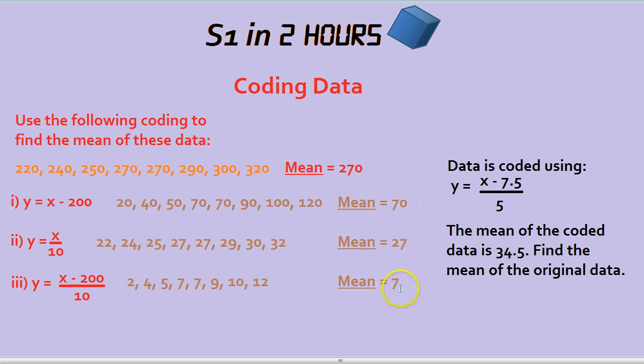And again, the same trick applies. If we wanted to go backwards, we'd do 7 times by 10 to get 70, and add 200 to get back to the original mean of 270. And it was a lot easier typing this into the calculator than it was typing the original numbers in. It was a lot quicker.